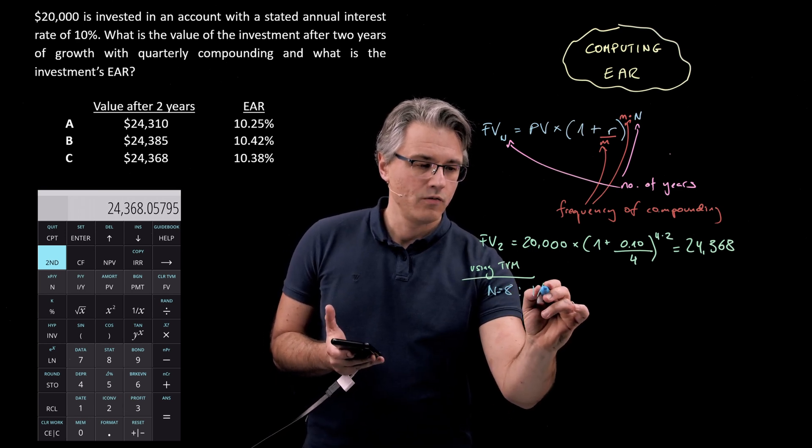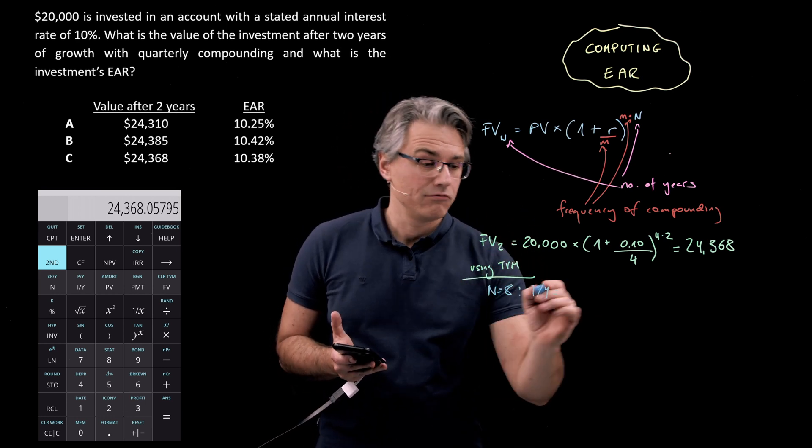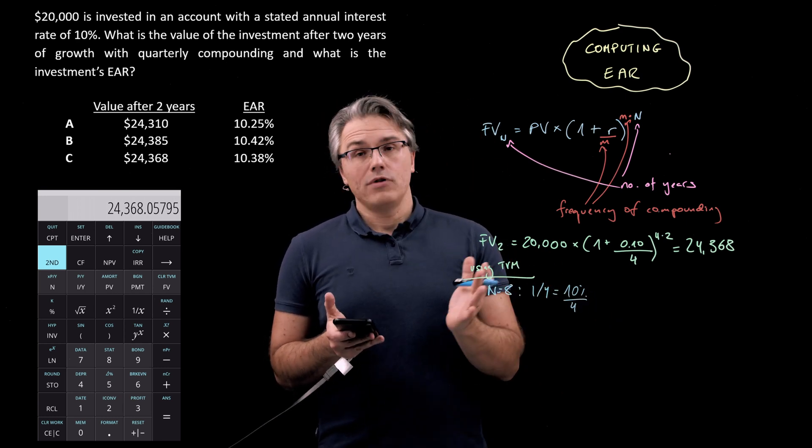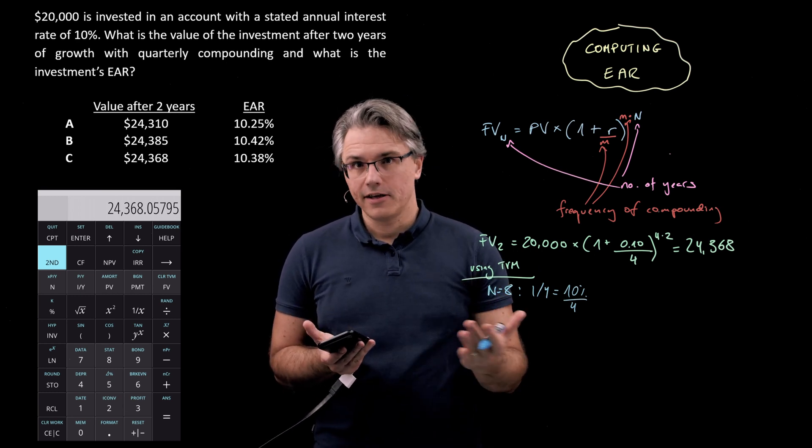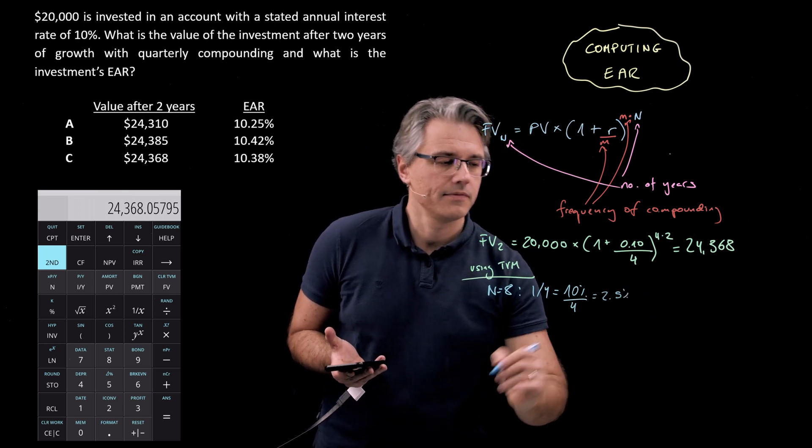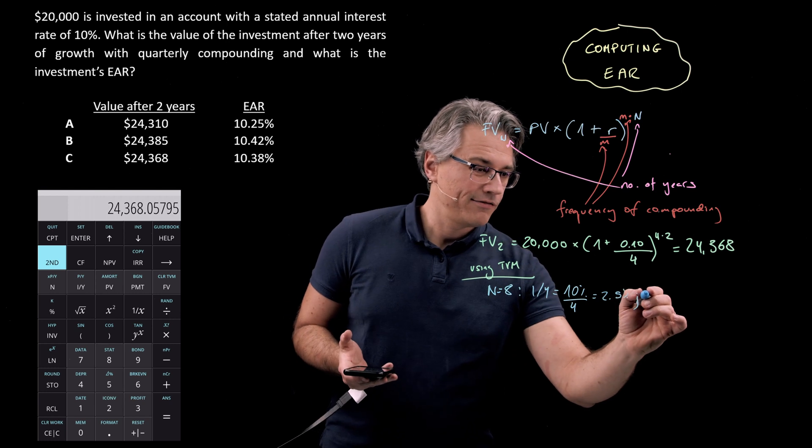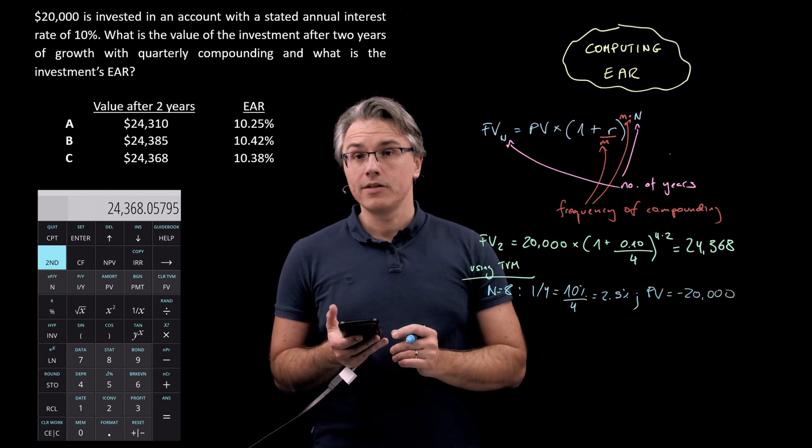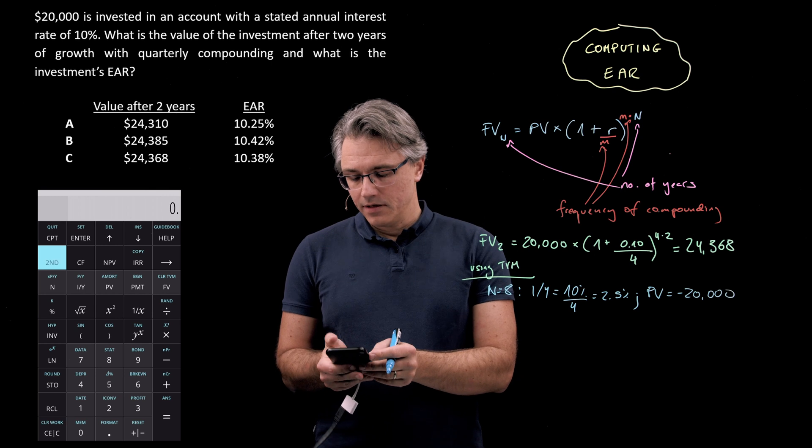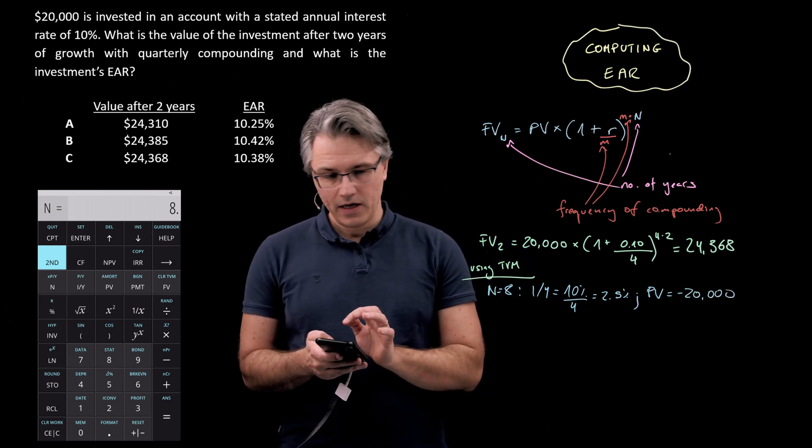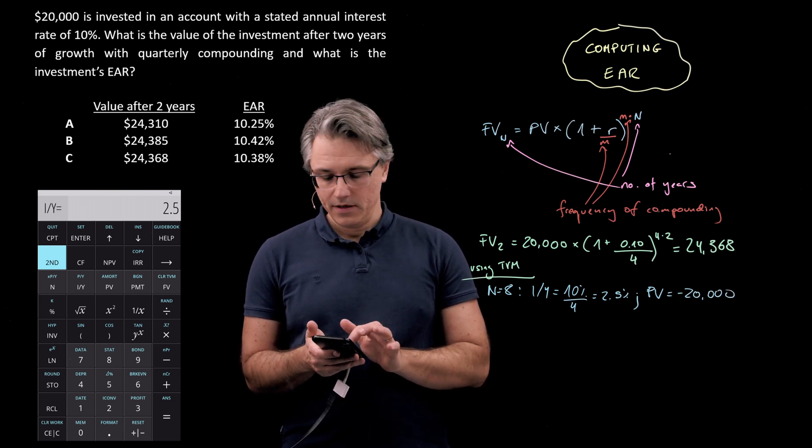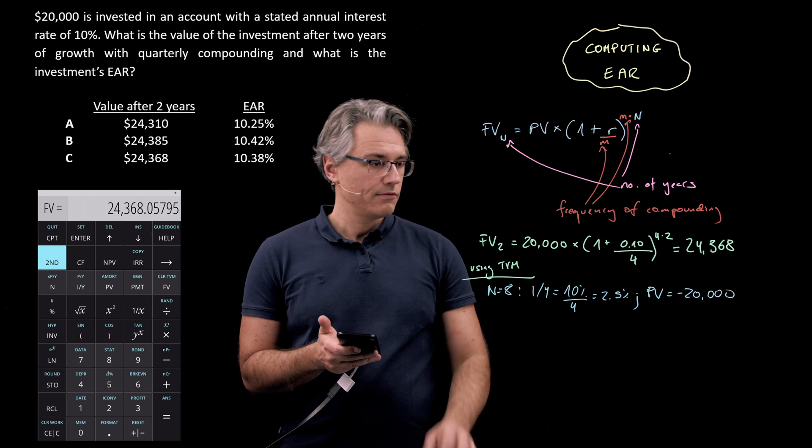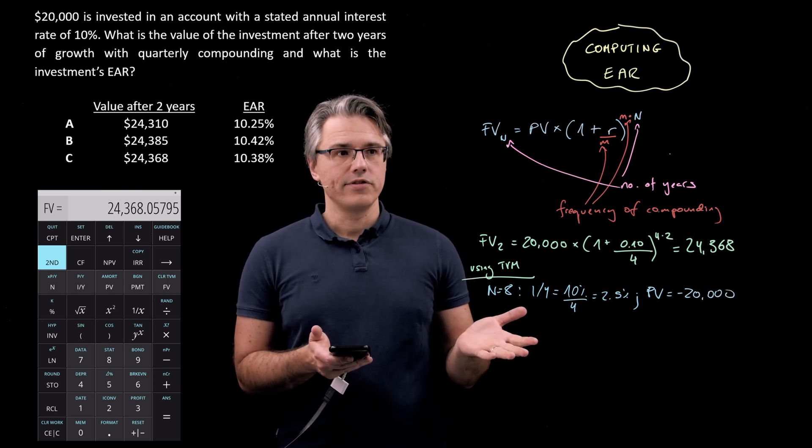So essentially using the TVM you would have n equal to 8. Obviously i over y wouldn't be 10 percent. It would be 10 percent divided by 4 because you'd need to scale the rate of return to whatever it is per period. If a period is a quarter then this is going to be 2.5 percent. We would need to have a PV equal to negative 20,000 and no PMTs. So let me clear the worksheet and have 8 for n, 2.5 for i over y, and 20,000 negative for the PV and compute FV. Okay 24,368. That is essentially the same result.